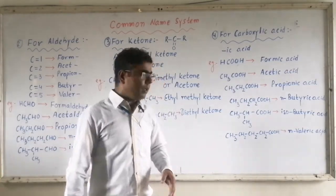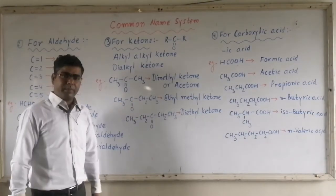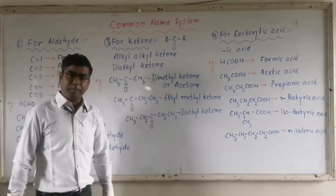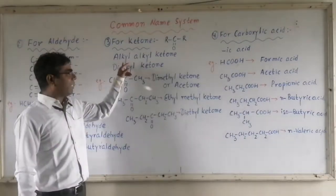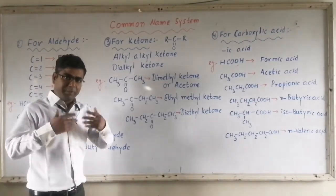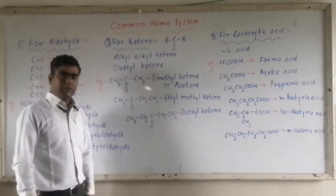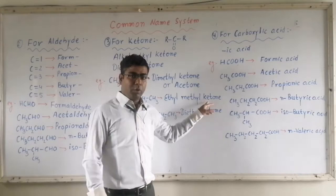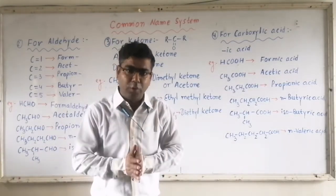The next member: CH3-CO-CH2CH3. On one side we have a methyl group, on the other side we have an ethyl group. So it will be named as alkyl alkyl ketone. Since 'E' of ethyl comes before 'M' of methyl, the compound will be named 'ethyl methyl ketone' — not 'methyl ethyl ketone.' It will be 'ethyl methyl ketone.' We have to follow alphabetical order.